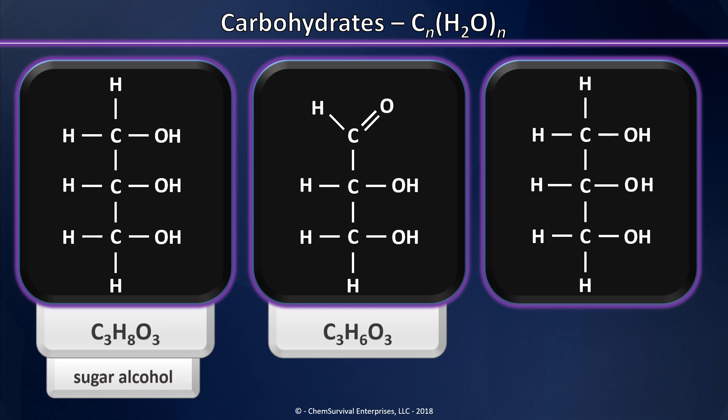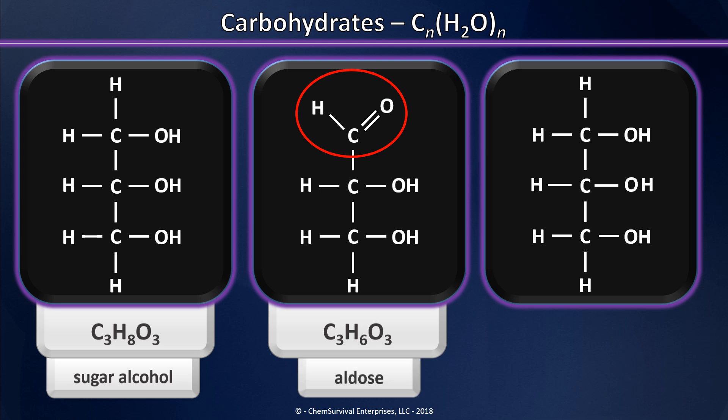But in doing so, I also created this group. That group is an aldehyde. So this class of carbohydrates, where there's a carbonyl bond at the terminal carbon, these are called aldoses.